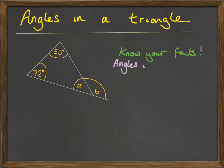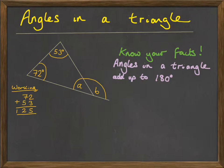Know your facts. Angles in a triangle add up to 180 degrees. So first of all, we'll add together the two known angles. They come to 125 degrees in total.